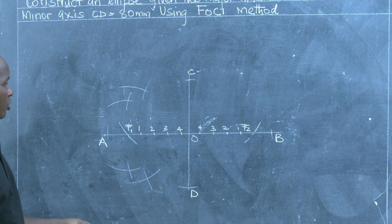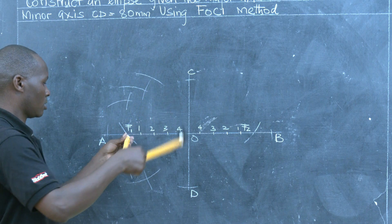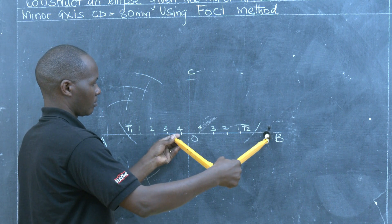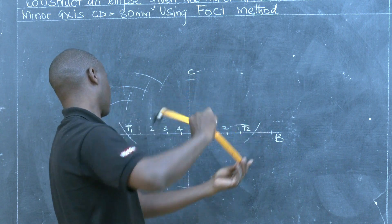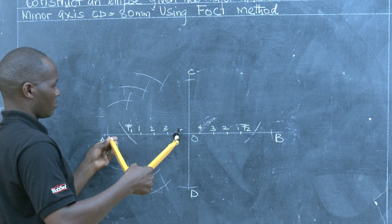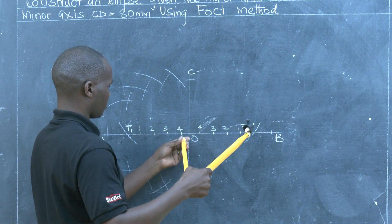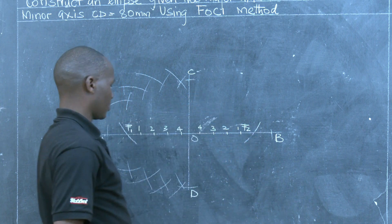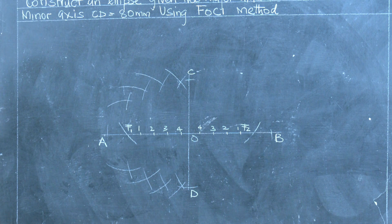We do the same with points 3 and 4. That will establish the points we require on the left-hand side of our minor diameter to complete the required ellipse.